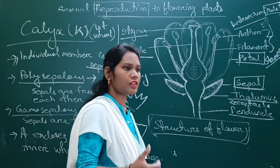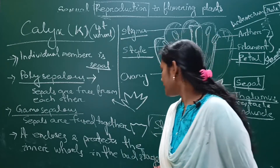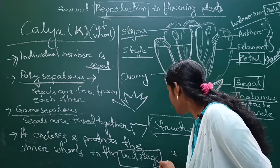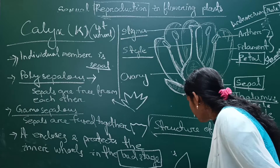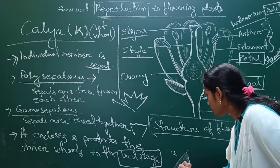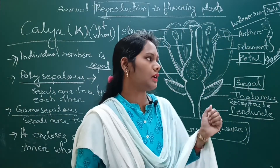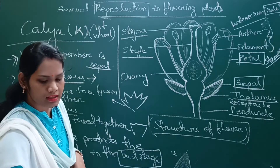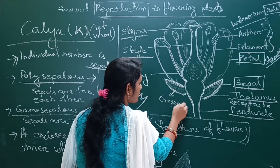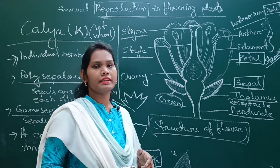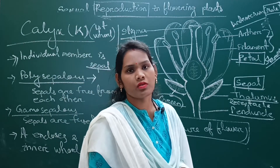The main function of calyx is that it encloses and protects the whole floral structure during the bud stage. The calyx part, which is green in color, also contains some chlorophyll pigment, and to some extent it helps in the photosynthesis process of the plant.